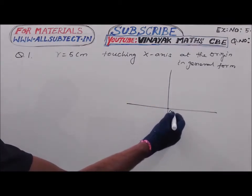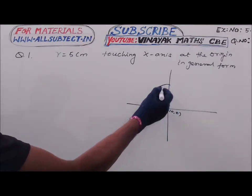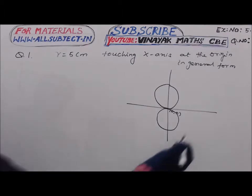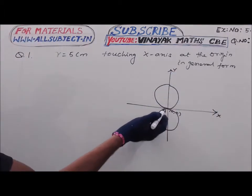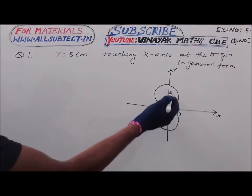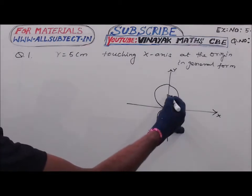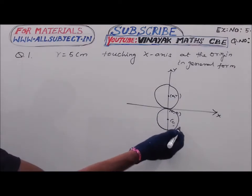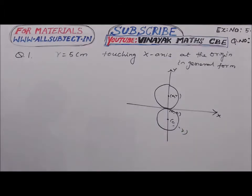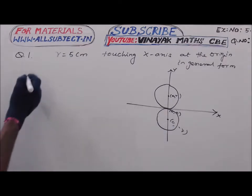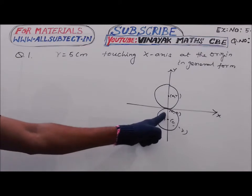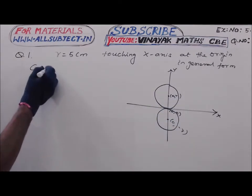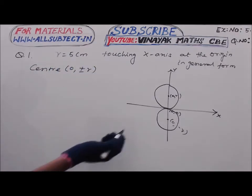The given circle touches the x-axis at the origin. This can happen in two ways: the circle may be above or below the x-axis. If we take the radius above the x-axis, the center is at (0, r), and below the x-axis it is at (0, -r). Therefore the center is of the form (0, +r) or (0, -r).